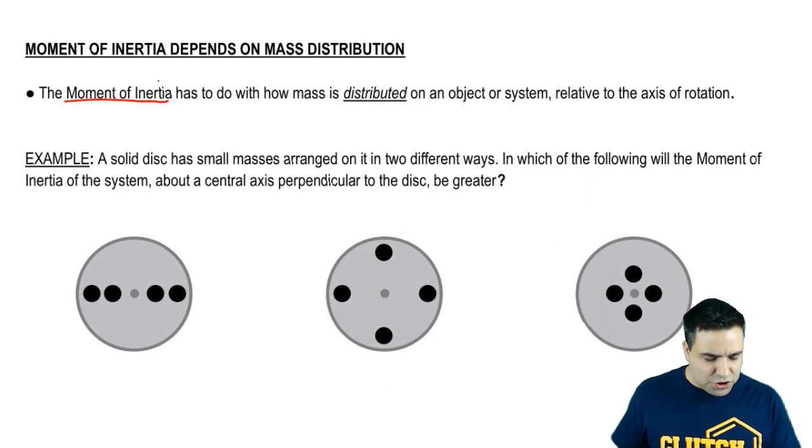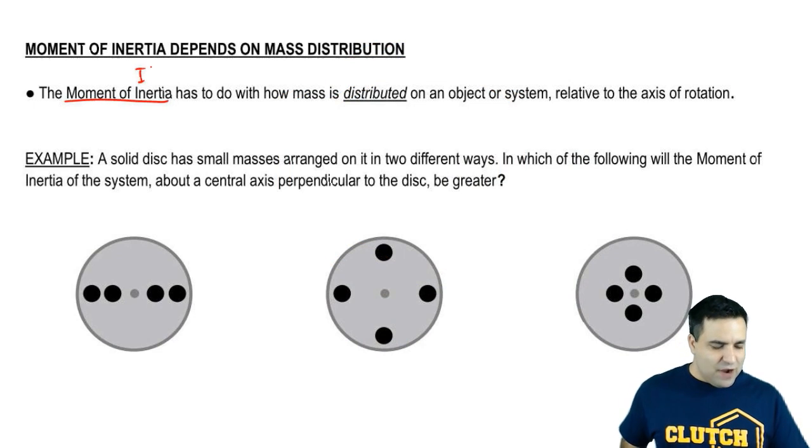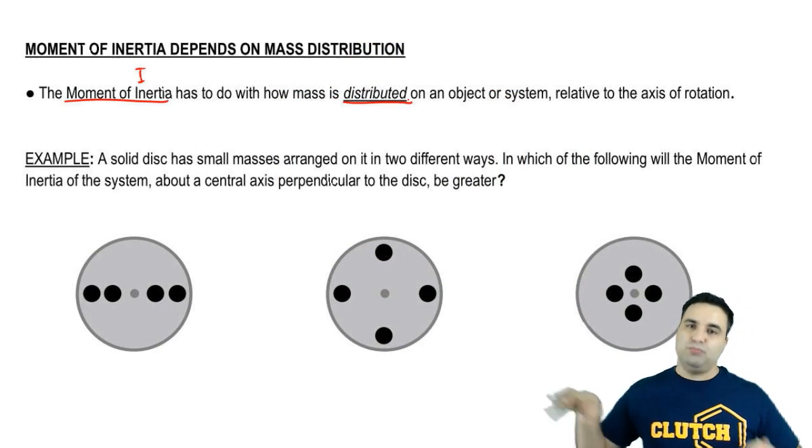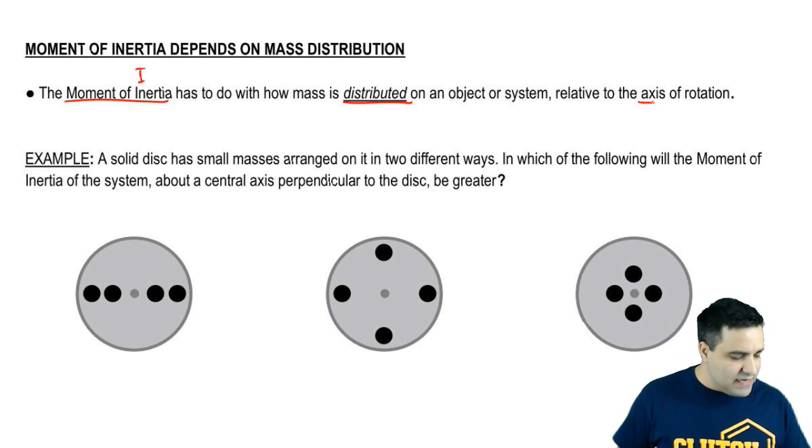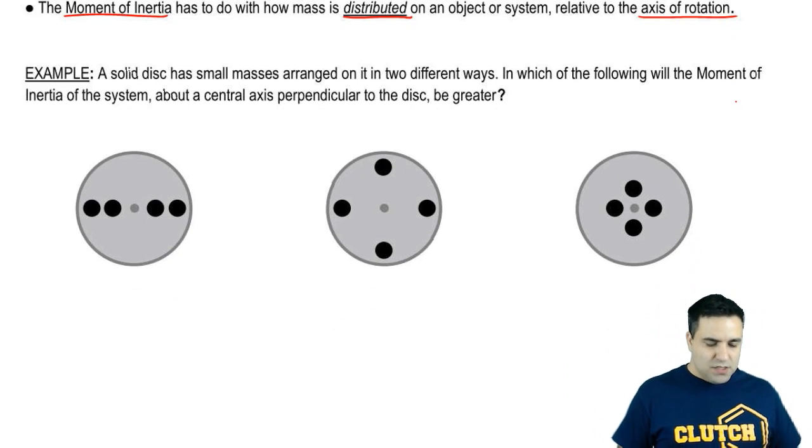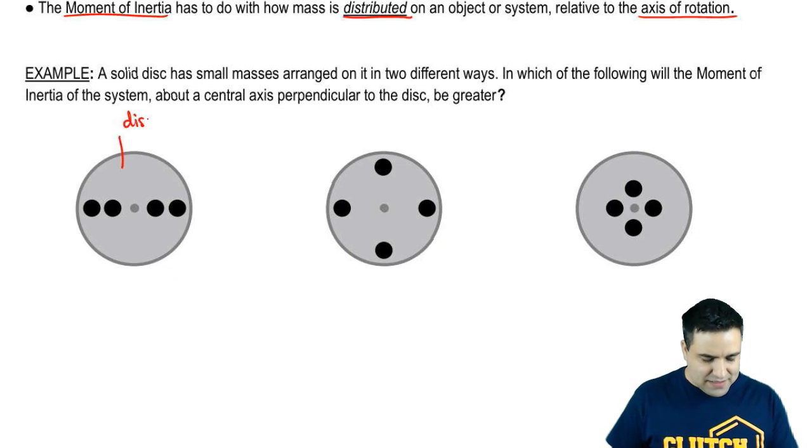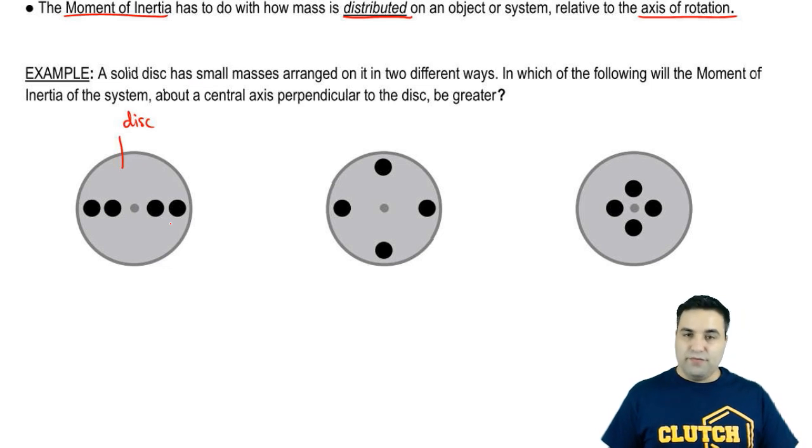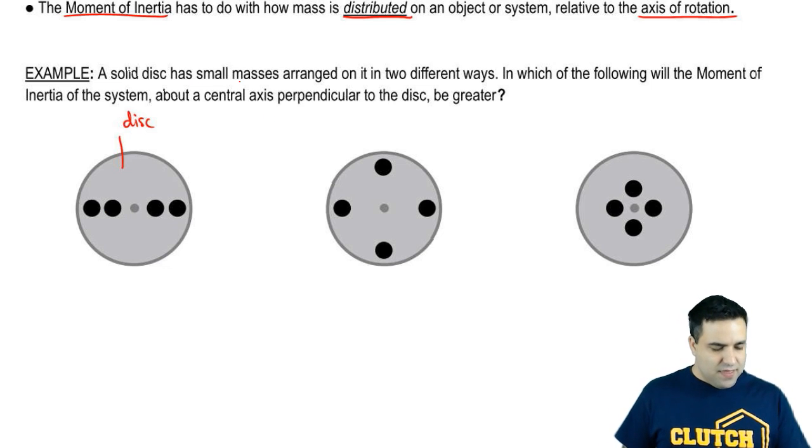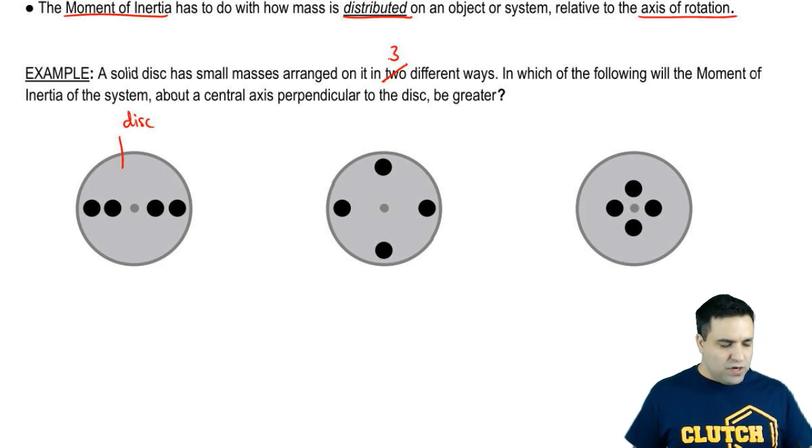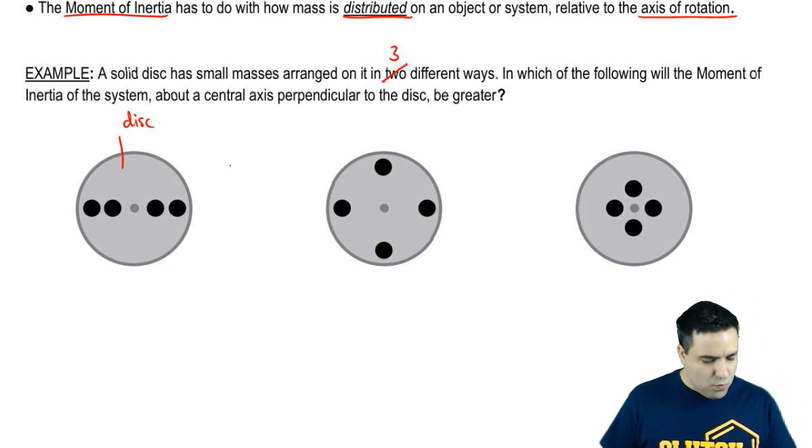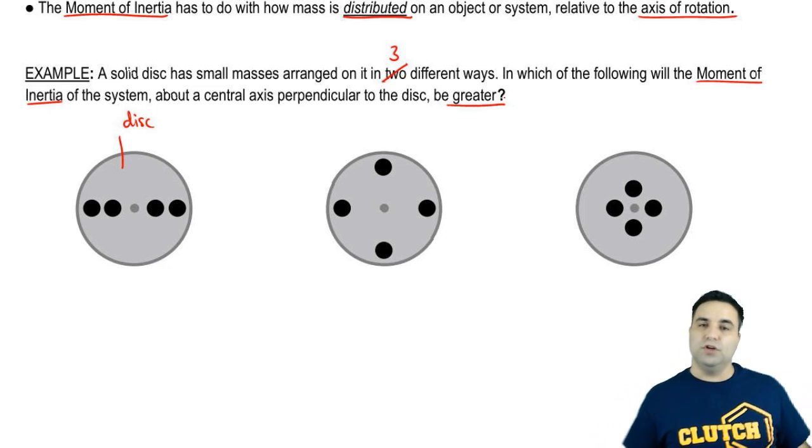So it says here that the moment of inertia, I, has to do with how mass is distributed, how it's spread out around an axis of rotation. So here we have a solid disk that has small masses. This is the disk, and the masses are the black dots, the four black dots. And they're arranged in three different ways. And I want to know in which of these will the moment of inertia be greater?